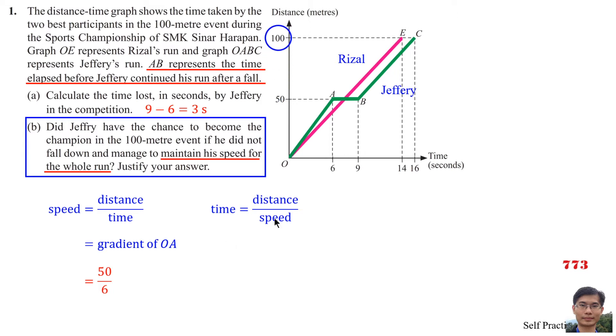Time is equal to Distance divided by Speed. Distance is 100m and speed is 50 over 6. This gives us 12 seconds.